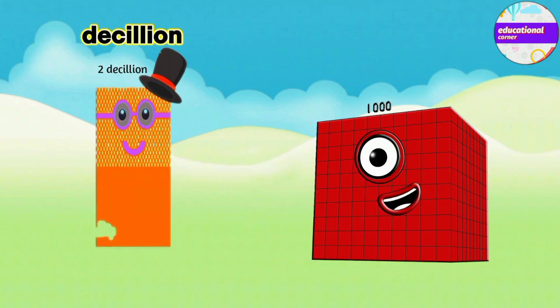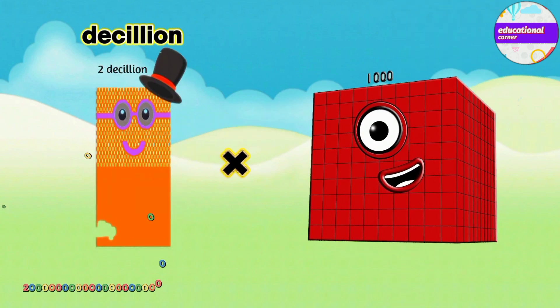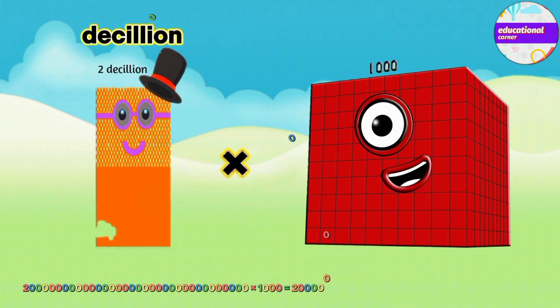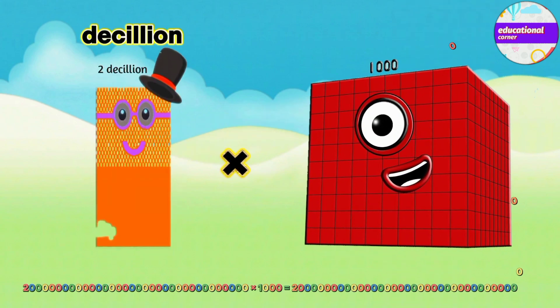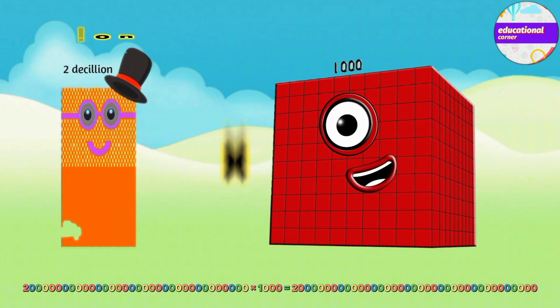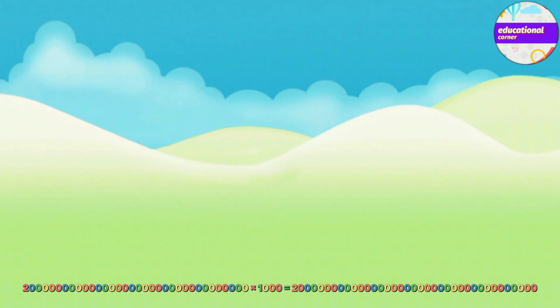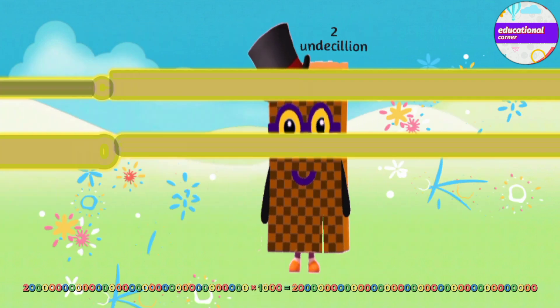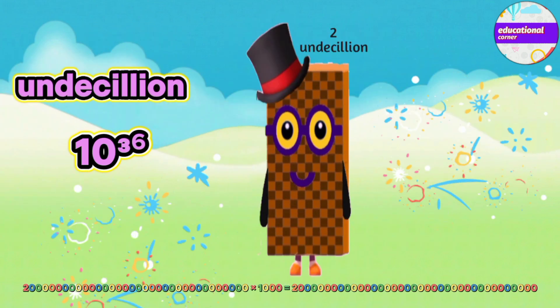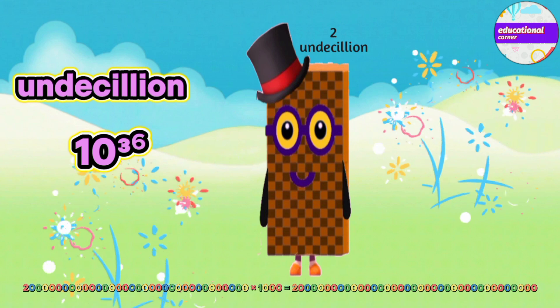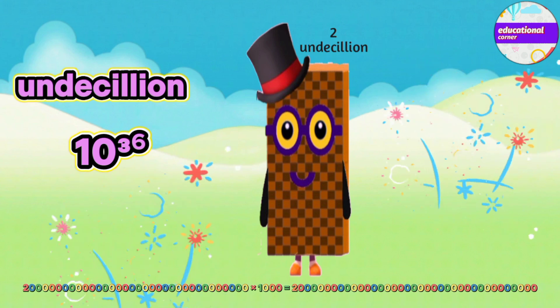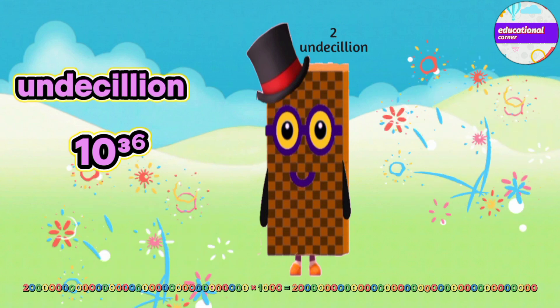Two decillion multiply by thousand equals two undecillion.